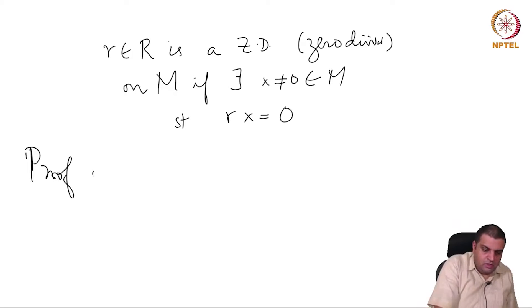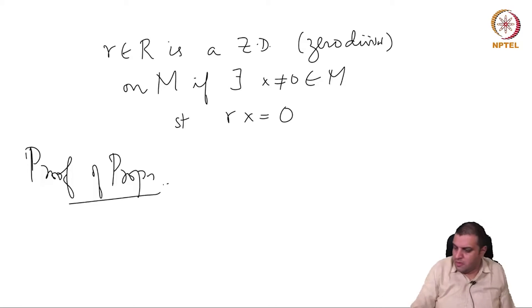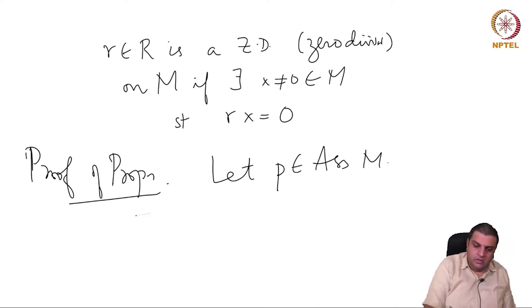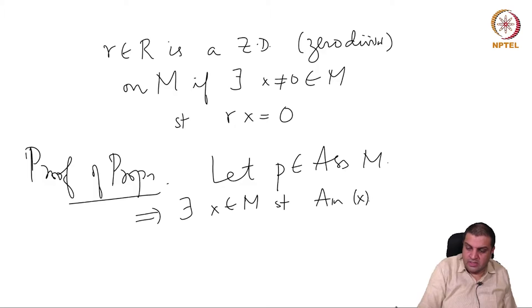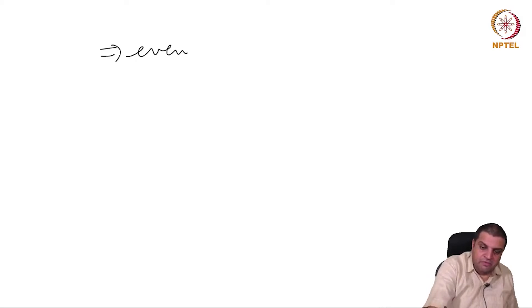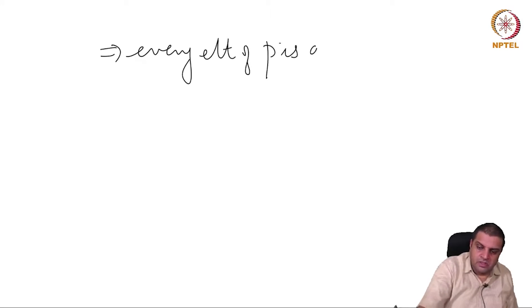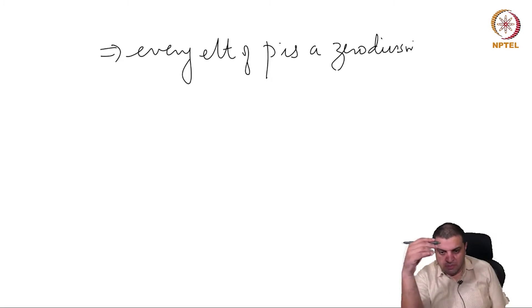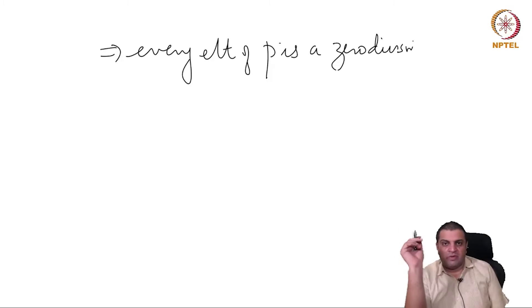Proof of proposition. Let P be associated to M. This implies that there exists x in M such that the annihilator of x equals P, and if the annihilator of an element is a proper ideal then x must be nonzero. This implies that every element of P is a zero divisor. Therefore the union over P, where P runs over the set of associated primes, consists of zero divisors and nothing else.